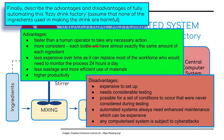Advantages: faster than a human operator to take necessary actions; more consistent — each bottle will have the exact amount of liquid and ingredients; less expensive over time as it can replace most of the workforce and run 24 hours a day; less wastage and more efficient use of materials; higher productivity. Disadvantages: expensive to set up; needs considerable testing; it's possible for a set of conditions to occur which weren't picked up during testing; automated systems always need enhanced maintenance, which can be expensive; and the computer system is prone to cyber attacks.